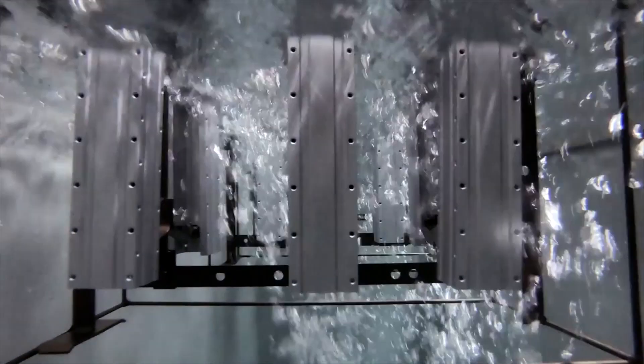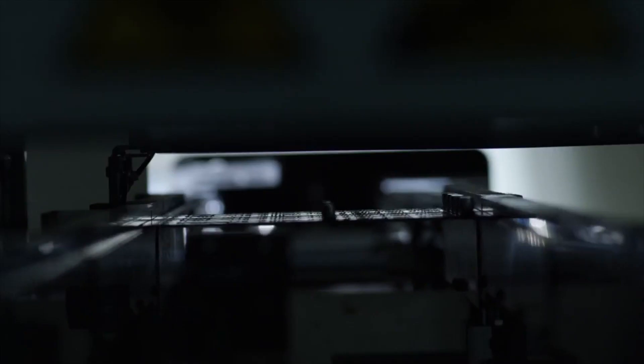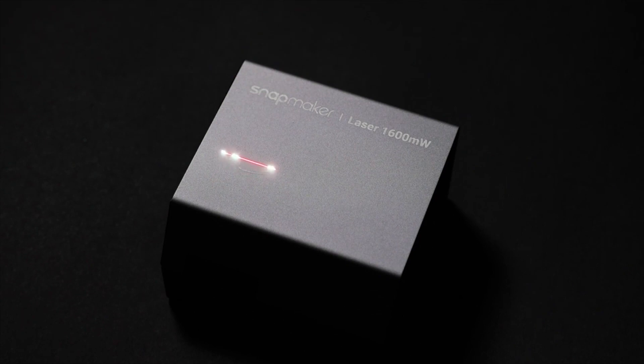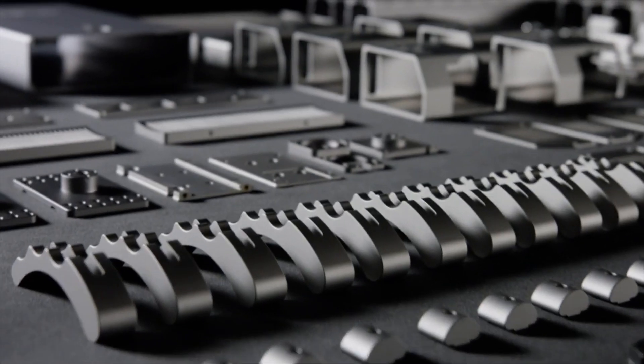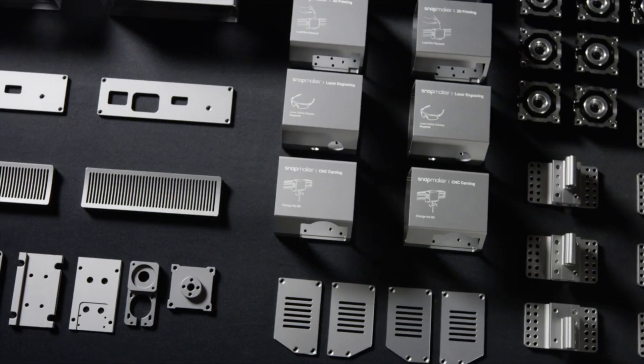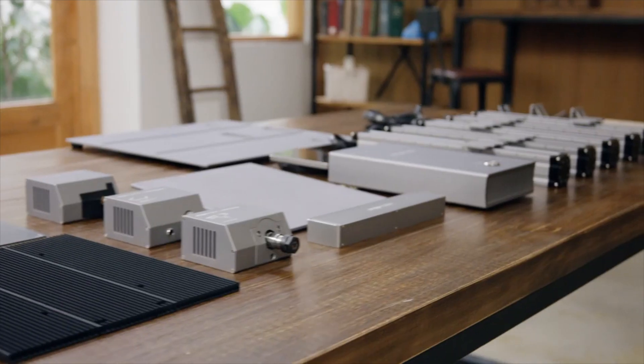The components are made from high strength metal and anodizing converts the surface of the metal into a durable anodic oxide finish. Each process is strictly controlled and due to the higher level of automation both the quality and the speed of production have been significantly increased. Every part is meticulously made. In creating the new Snapmaker we've taken the all metal design to the next level.